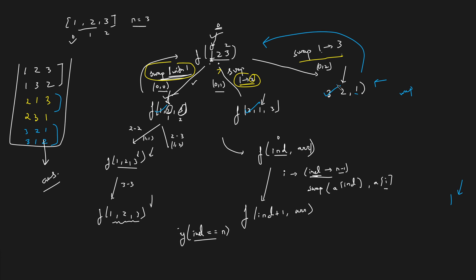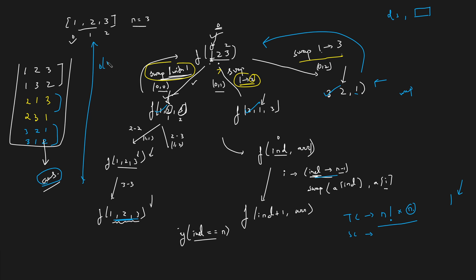For time complexity, we generate n factorial permutations, run a loop of size n, and copying each permutation takes O(n) time, so the total is O(n! × n). For space complexity, we are not using any extra map or data structure as in the previous solution. Apart from the recursion stack depth of O(n) and O(n!) space for the answer, no extra space is used.